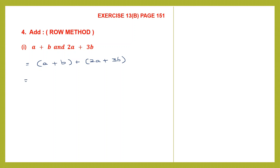In the second step, we are going to remove the brackets and we are not going to change the sign of any term, because we have plus signs before the brackets. So there is no need to change any sign. We write: a plus b plus 2a plus 3b. In the next step, we take the like terms — terms that have the same variable. We take all the a's together: a plus 2a.